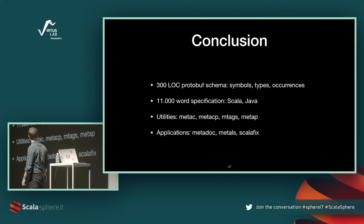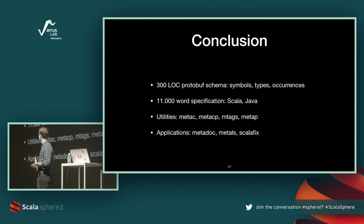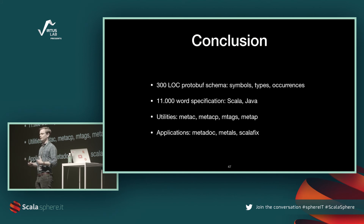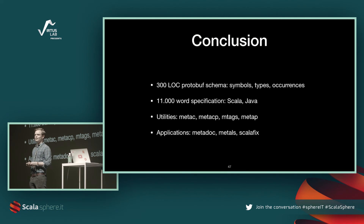I'm running out of time. To conclude: we have a 300-line JSON schema documenting symbols, types, and occurrences in source files; a very comprehensive spec documenting how things map from both Java and Scala; a suite of utilities to produce, analyze, and process the data; and we're building a family of tools using the data, with the goal of having better tools for Scala. If you're excited and think this is interesting, come talk to me — there's a lot of potential in doing more than what I've shown today. Thank you.